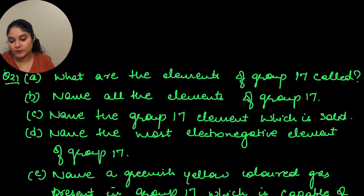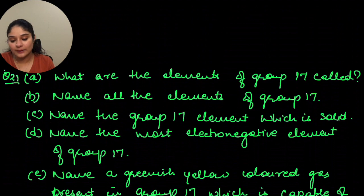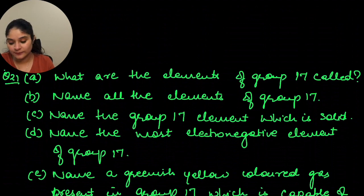Question 21: what are the elements of group 17 called? They are called halogens. Name all the elements of group 17: fluorine, chlorine, bromine, iodine, and astatine.